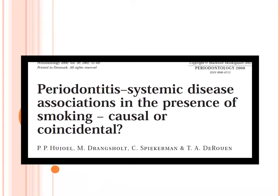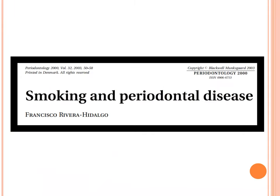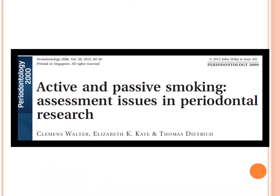As usual, there are lots of researchers at the molecular level, clinical level, and systematic reviews in very esteemed journals of perio. I would always like to suggest some things you're not supposed to miss — the periodontitis-systemic disease association in the presence of smoking, and smoking and periodontal disease. There is also one from 2012 on active and passive smoking assessment issues in periodontal research. Go through the article and make sure the conclusion is read.